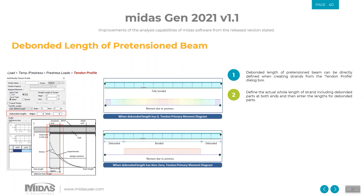In the Midas Gen 2021 version 1.1, the bonded length of pretension beams can now be added, allowing a more realistic and conservative design of prestress elements or members.